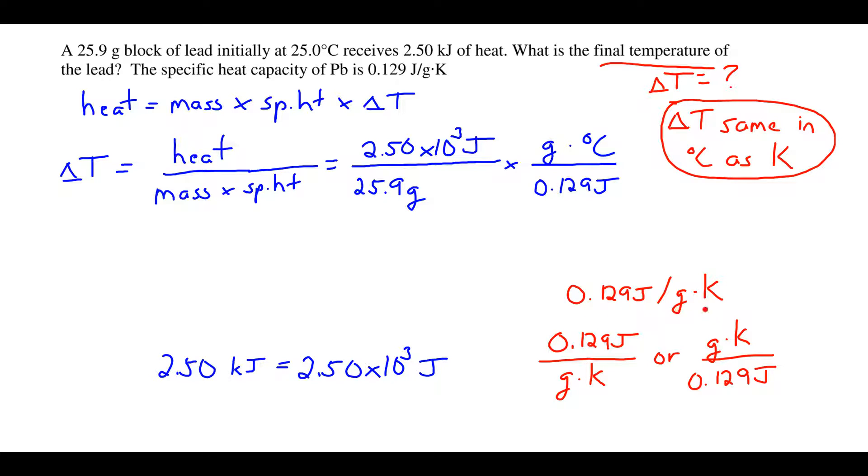One more thing we want to remind ourselves of: if we look at our identity of our specific heat, we can write two different conversion factors. We can say 0.129 joules is equivalent to a gram K, or we can write a gram K as equivalent to 0.129 joules. The one we use depends on what units we need to cancel. Here we want to cancel units of joules, so we're going to use this version of the conversion factor.